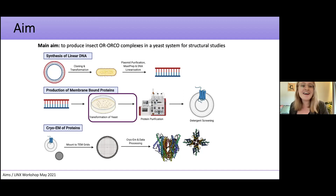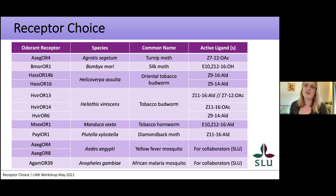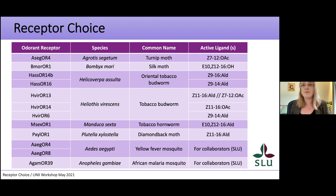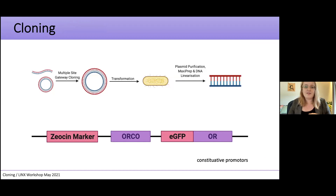In terms of receptor choice, there are so many to choose from. We tended to choose highly specific receptors, apart from one with an unusual functionality responding to two ligands. We also have collaborators at the Swedish University of Agricultural Sciences interested in mosquito receptors. We decided to go with about 12 receptors as a reasonable starting number — at some point you just have to pick 12.